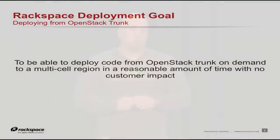So why are we here? We're going to be talking about deploying from trunk — it's a strategy we selected for OpenStack at Rackspace. The whole reason is because we want to be able to deploy from trunk, on demand, in a multi-cell environment, with a reasonable amount of downtime for our customers — and preferably no downtime. 'Reasonable' is still a changing number because we're still working on improving that process.